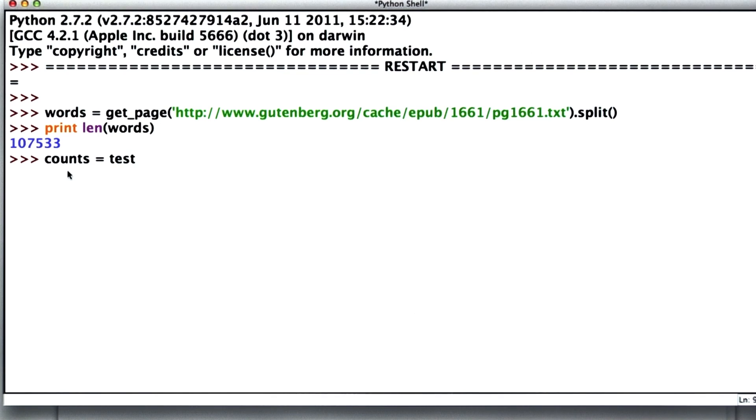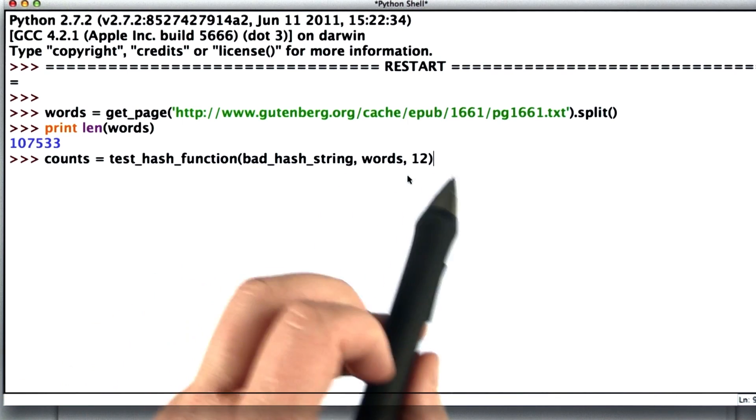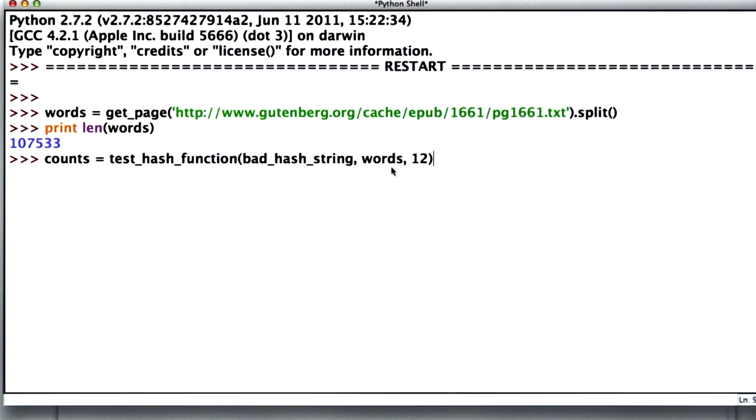So we'll use the test_hash_function that we defined, passing in bad_hash_string, the words that we got from Sherlock Holmes. And we'll pick, for now, we'll use size 12, definitely too small. But that'll give us a good sense of how the distribution goes for a small number of buckets. So now we have the result.